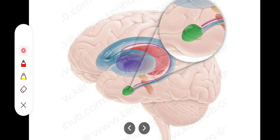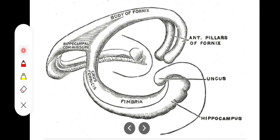The amygdaloid nucleus has a larger basolateral group and a smaller cortical medial group. The stria terminalis arises from the posterior end of the amygdaloid nucleus and connects with the main caudate nucleus. From the hippocampus, the sequence goes: alveus, then fimbria, then the crus of the fornix. The two crura combine at the level of the hippocampal commissure and continue as the body of the fornix, which then divides into two anterior columns terminating within the mammillary bodies.